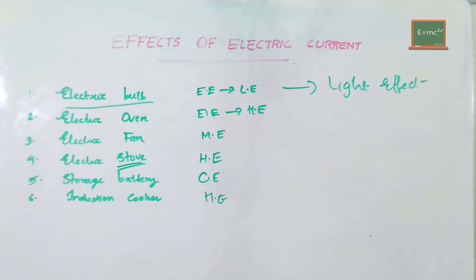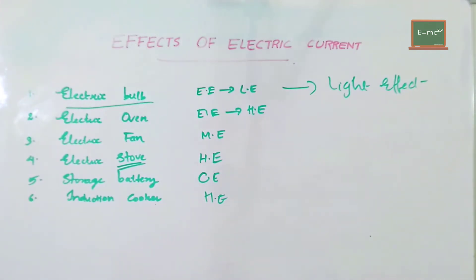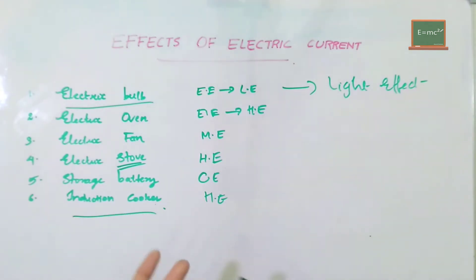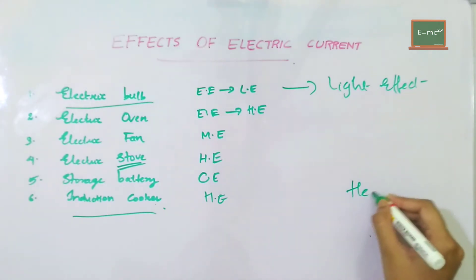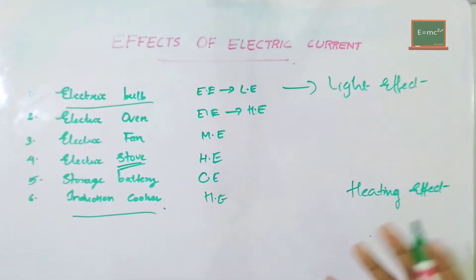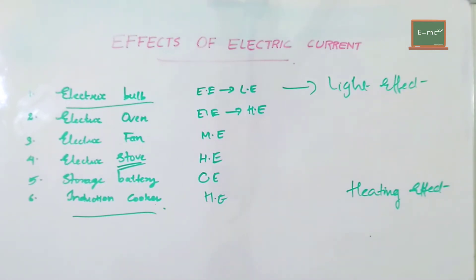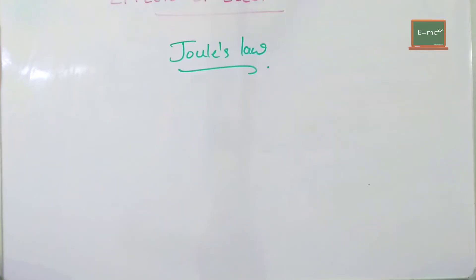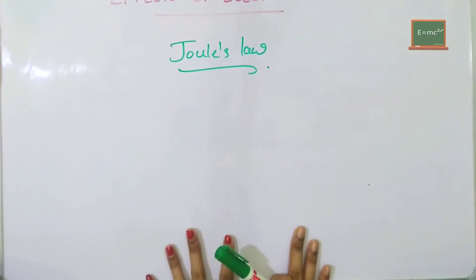So, we will convert into the heat effect. This is the heat effect. It is the chemical effect in the storage battery. Then, the induction cooker will convert into the heat effect. So, now we say that every device will convert electrical energy into some other form of energy in the environment. We will start with an introduction.